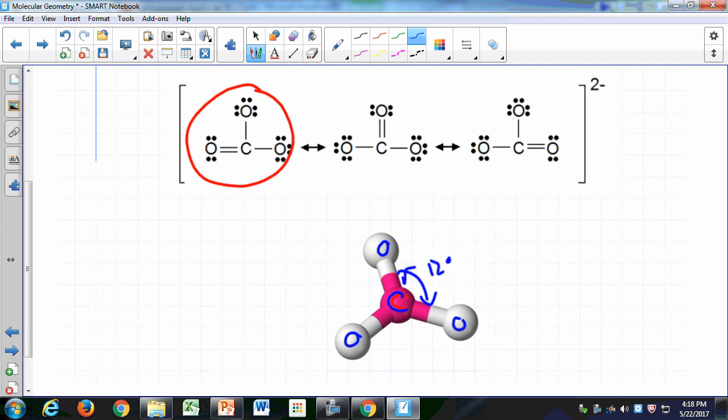Notice there are three possible resonance structures where your double bond location can be at three different places. So if you average these out, you can say all of those carbon to oxygen bonds are equivalent. And so you will have a perfect trigonal planar geometry here. You have 120 degrees angle all around.